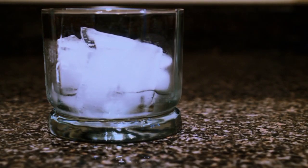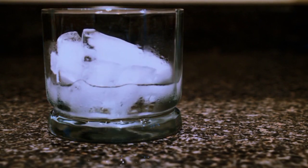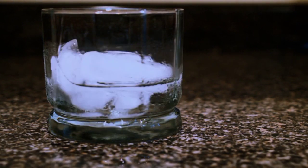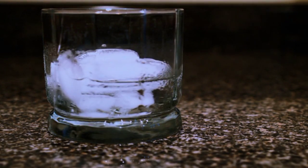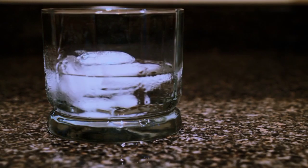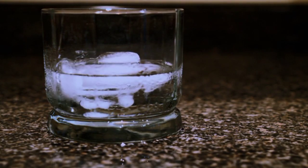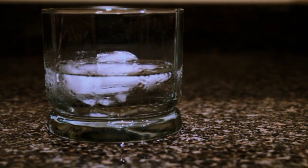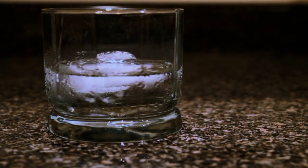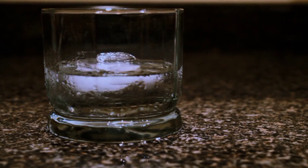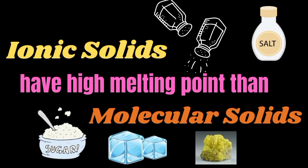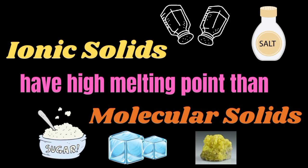If more heat is added, the liquid particles move even faster and farther apart, such that they become independent of one another. Ionic solids have higher melting points than molecular solids.